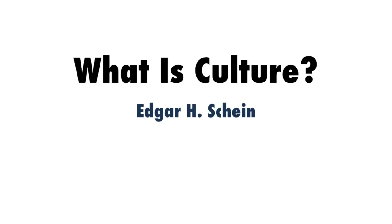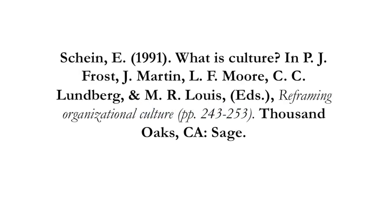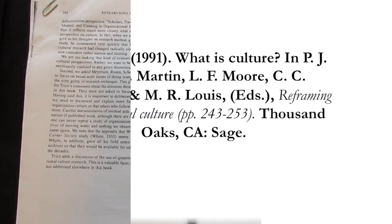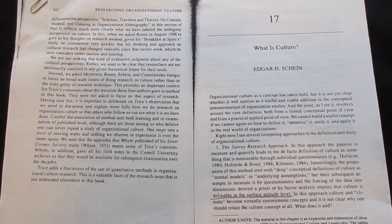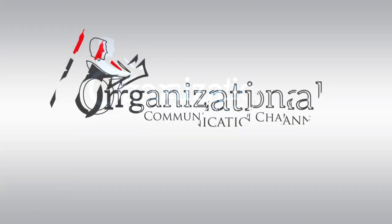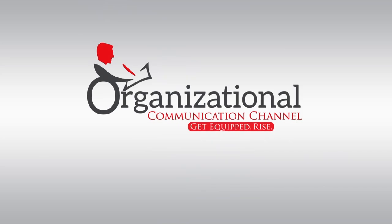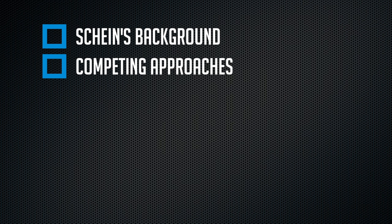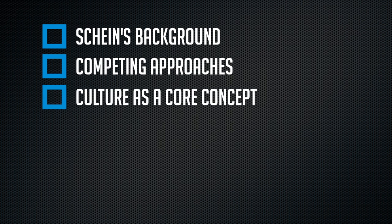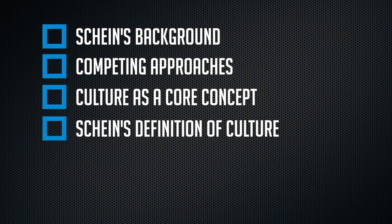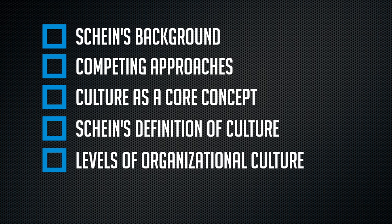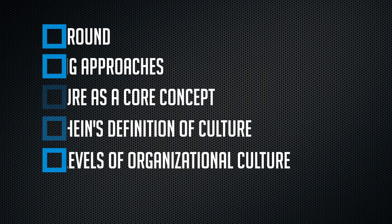Hello friends, we're going to be looking at organizational culture, specifically Edgar Schein's article 'What is Culture?' — the 1991 version in the book Reframing Organizational Culture. We'll start by talking about Schein's background, then the competing approaches to study culture, culture as a core concept, Schein's definition of culture, and lastly the levels of culture. That's really what this article is known for — most people come away with the understanding of the three levels of culture.